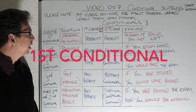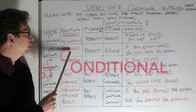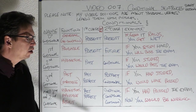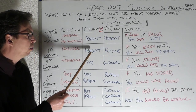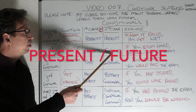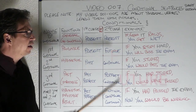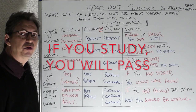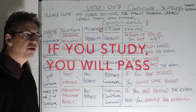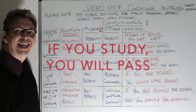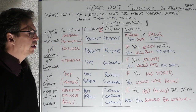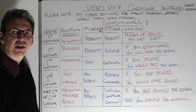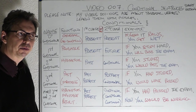The first conditional is the probable. It's probable or possible — it could happen but you need a condition. So we have the present with the future. If you study hard, you will pass the exam. They're trying to encourage you. If you study hard you will pass the exam — it's possible you will pass.